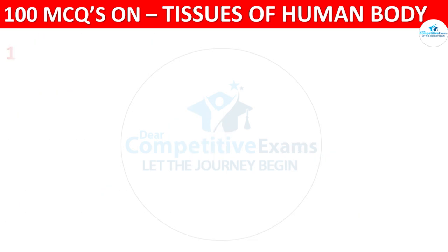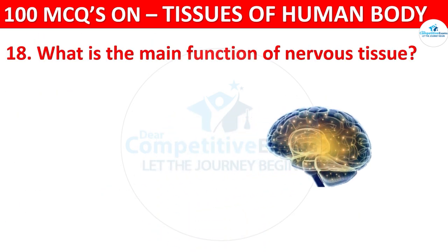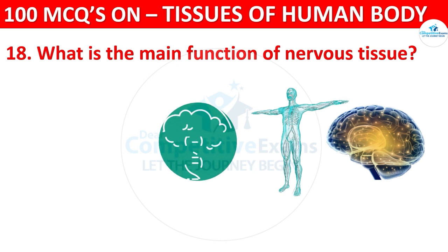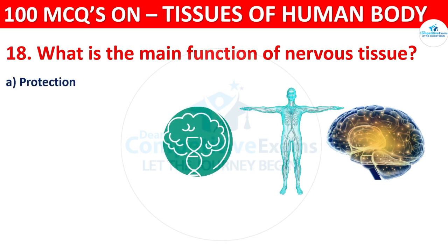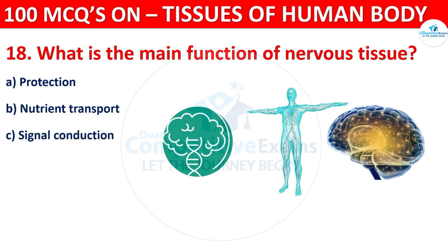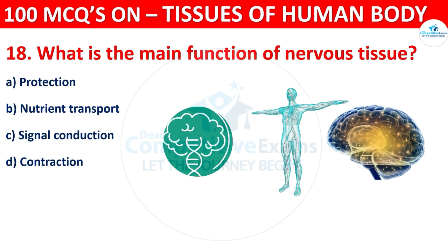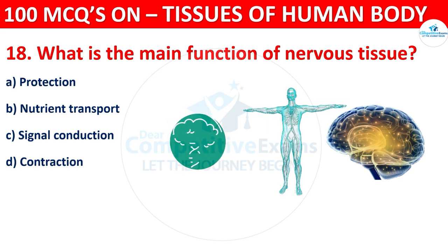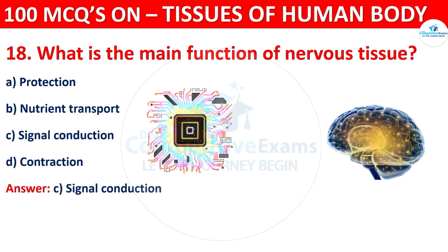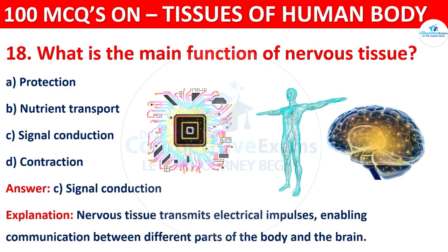Question number eighteen: what is the main function of nervous tissue? Options are protection, nutrient transport, signal conduction, or contraction. The correct answer is C, that is signal conduction. Nervous tissue transmits electrical impulses, enabling communication between different parts of the body and the brain.